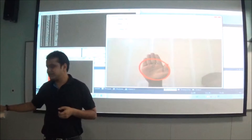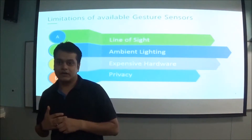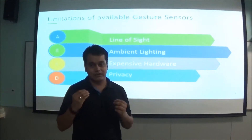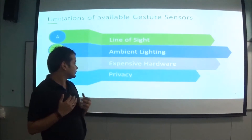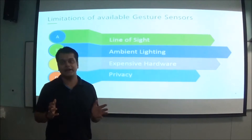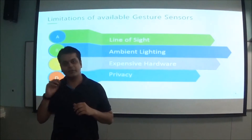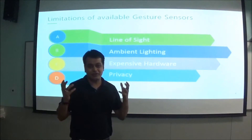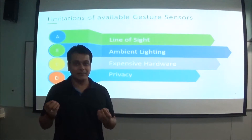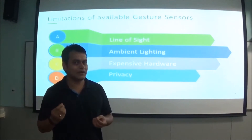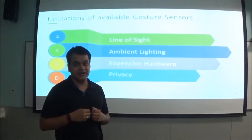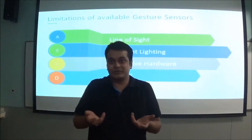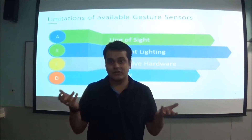But like every technology, this also had some limitations. We could have used a Kinect, but we chose a simple webcam because every computing device came with one. The limitation of cameras or any gesture sensor was that it required the user in the line of sight — it was really difficult to always be present in front of a camera. It also required ambient lighting. Hardware like Kinect is fairly expensive, and nobody wants their privacy compromised in front of a camera. So we had to come up with another solution.